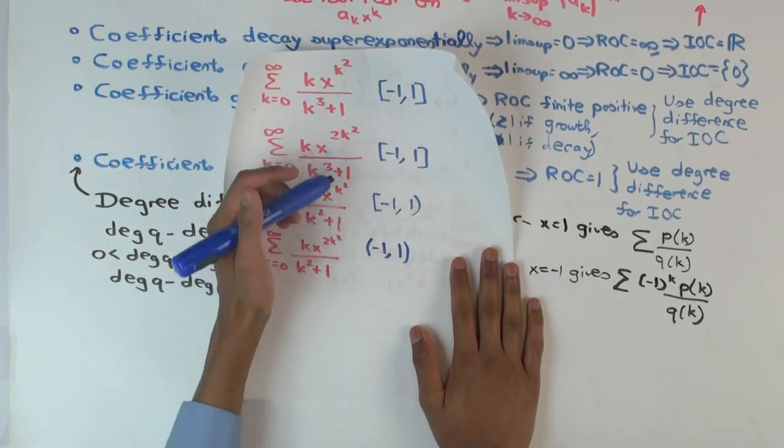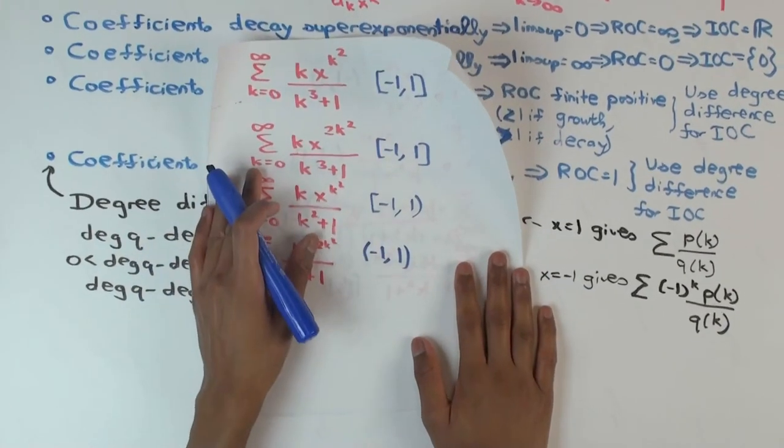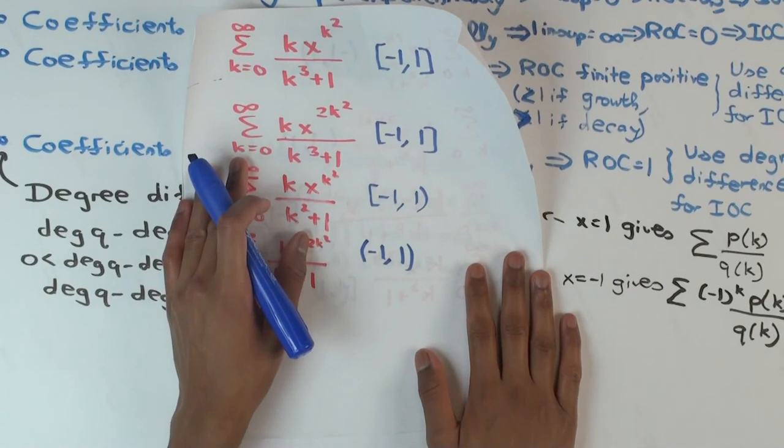So we see that changing the k to k squared, at least as far as this goes, doesn't really make any difference because we're just trying to plug in the endpoints, 1 and minus 1. And when we're just trying to plug in the endpoints, whether it's k or k squared doesn't make a difference.